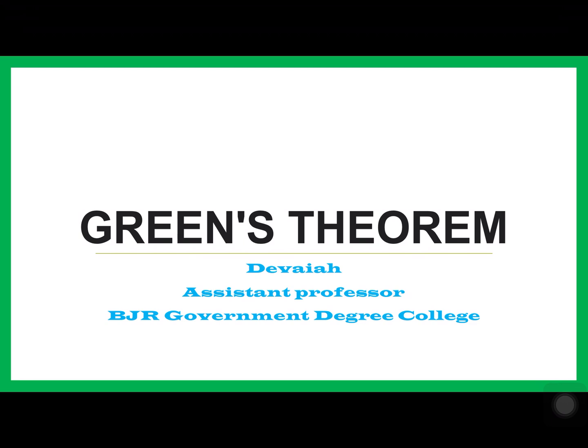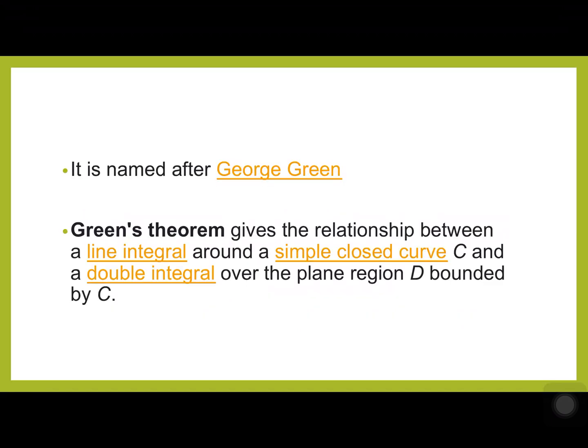Hello, good morning my dear friends. Today our topic is Green's theorem — the proof of Green's theorem, what it is, and some important problems to help you understand better. Earlier, two theorems were used on vector fields: Gauss's divergence theorem and Stokes' theorem. They are applicable on vectors, whereas Green's theorem is actually working on scalar fields or scalar functions.